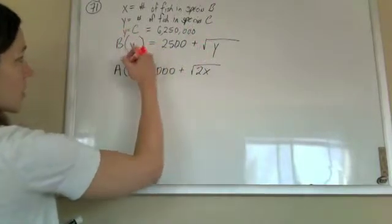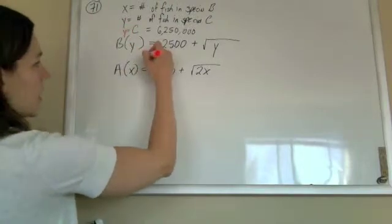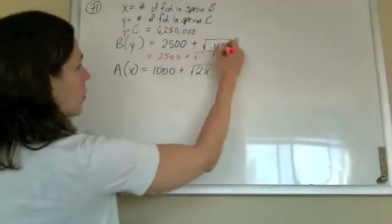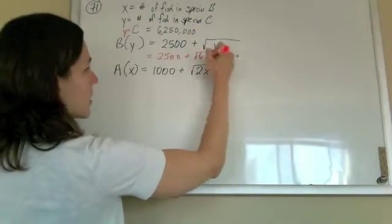So we're just going to look backwards. We're going to say that to find B, I'm going to plug in Y, which is that nasty number.